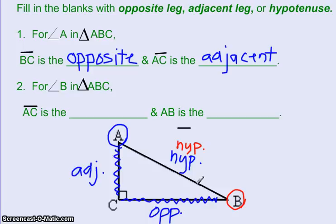But now it asks about AC. Well, AC isn't my adjacent anymore. It's not touching angle B. Now it's become the opposite one, or the opposite segment, I should say.